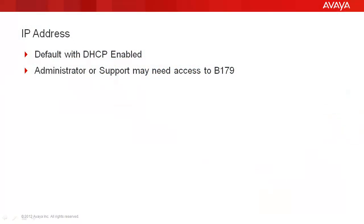A couple of things about the IP address of the B179. First, out of the box, the B179 defaults with DHCP enabled, so the assumption is that it will get its IP address from a DHCP server. That will not always be practical, so there will be times we're going to have to statically assign it, but most of the time it will get its IP address from a DHCP server.